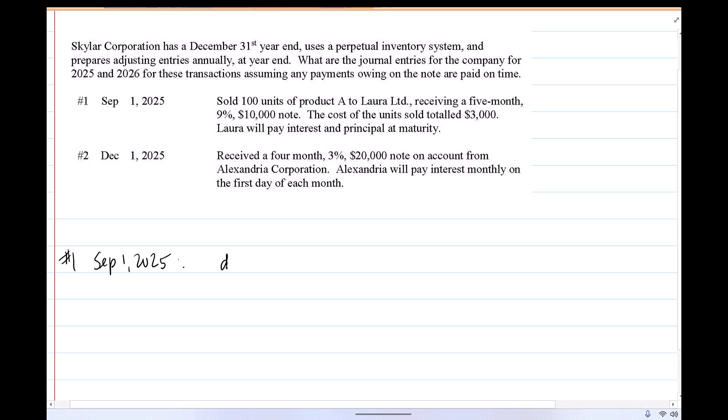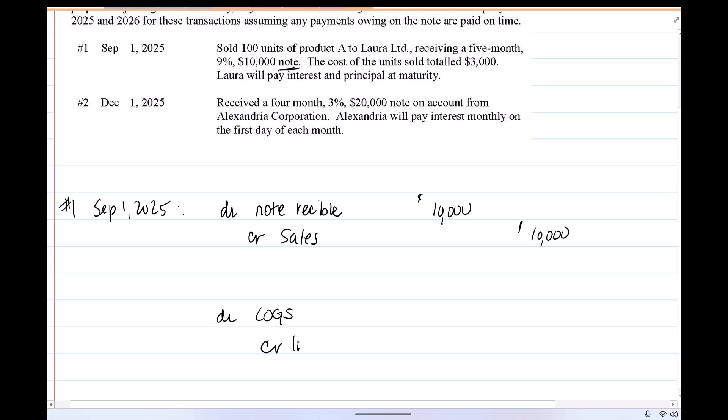So September 1, we sold a product. We sold it not on account, not for cash. We sold it getting a note in return. So debit note receivable for $10,000 and credit sales. This is a perpetual inventory system. So we also need to record the movement of our inventory from inventory for $3,000 to cost of goods sold.